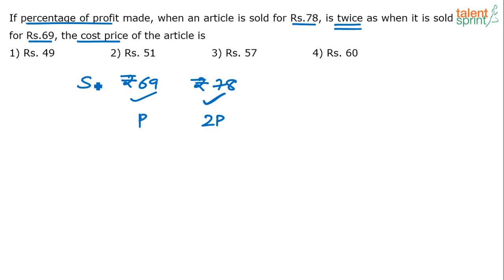These are the selling prices — selling price equals 69 in one case and selling price equals 78 in the other. Now, without putting pen on paper you can solve this in about eight to ten seconds maximum. All you need to understand is how to break up 69 and 78.